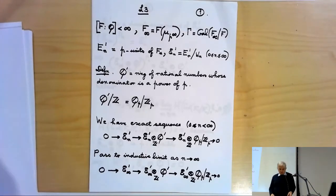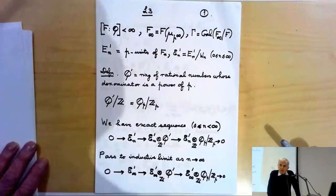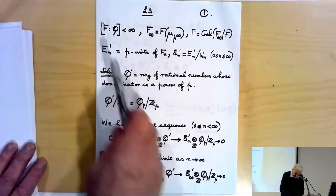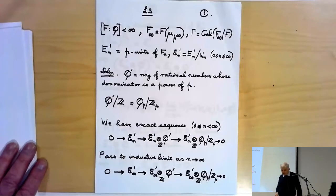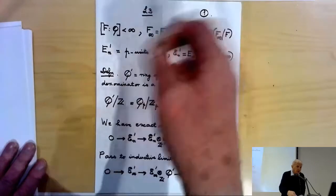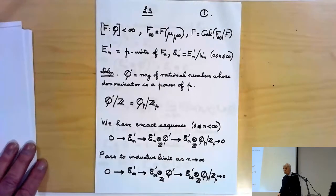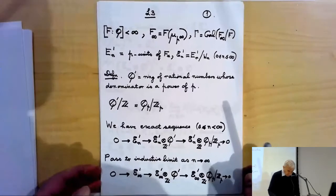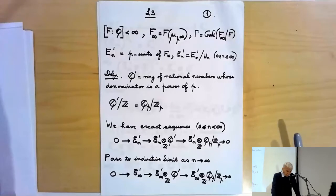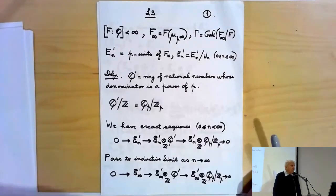What I want to do today is give Iwasawa's proof of Theorem B. Let me remind you of the situation: we have an arbitrary finite extension F of Q, and we have the cyclotomic Zp extension. We're assuming there are enough roots of unity in the ground field so that this Zp extension F∞ is just F adjoined μ_{p^∞}. As usual, I'm writing γ for the Galois group of F∞ over F.